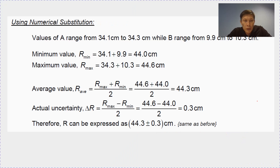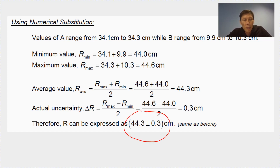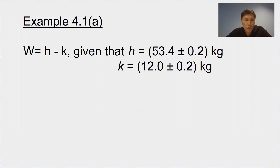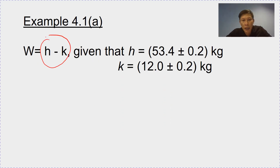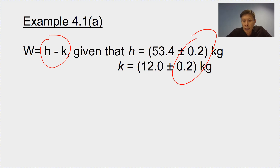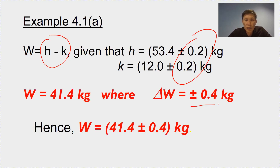In the lecture notes, I also use the method of numerical substitution to prove that you will get the same result. More on how to use numerical substitution in the last part of this video. For example, for 4.1A, for subtraction H minus K, you also add up the uncertainties. For both addition and subtraction, you just simply add up the uncertainty: 0.2 and 0.2, so you get 0.4.